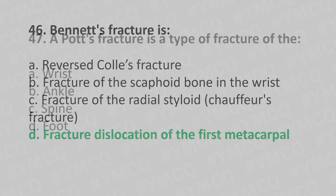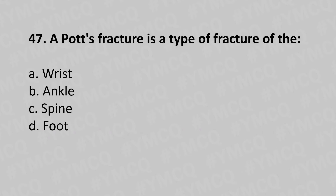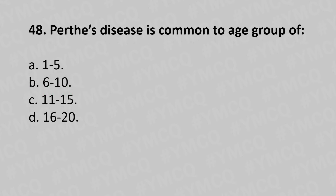Moving to our 47th question: a Pott's fracture is a type of fracture of the option A wrist joint, option B ankle joint, option C spine, option D foot. The answer is option B ankle.